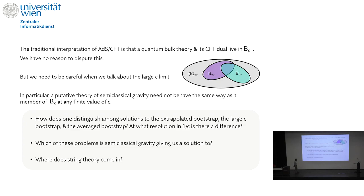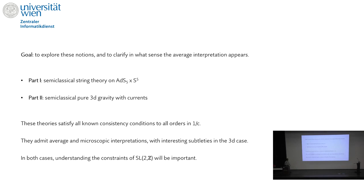The questions this poses are: first, how does one distinguish among solutions to the large C bootstrap or the averaged bootstrap, and at what order in 1/C is there a difference? Second, which of these problems is semi-classical gravity solving, and where and how does string theory come in? The goal of the talk is to explore these notions and clarify the sense in which the average interpretation is appearing. There will be two parts: the first involving semi-classical string theory in AdS5 × S5, and the second involving a new type of pure 3D gravity theory which involves currents. Both theories satisfy all consistency constraints to all orders in 1/C.